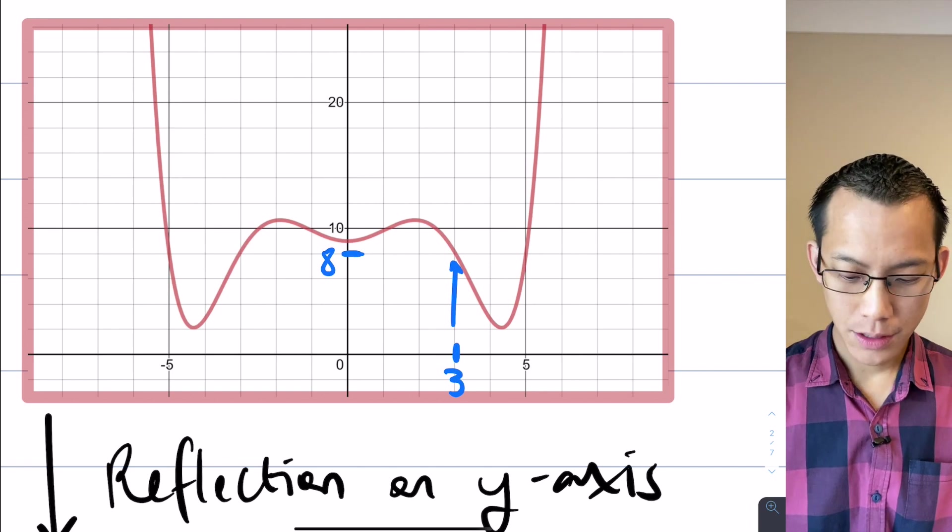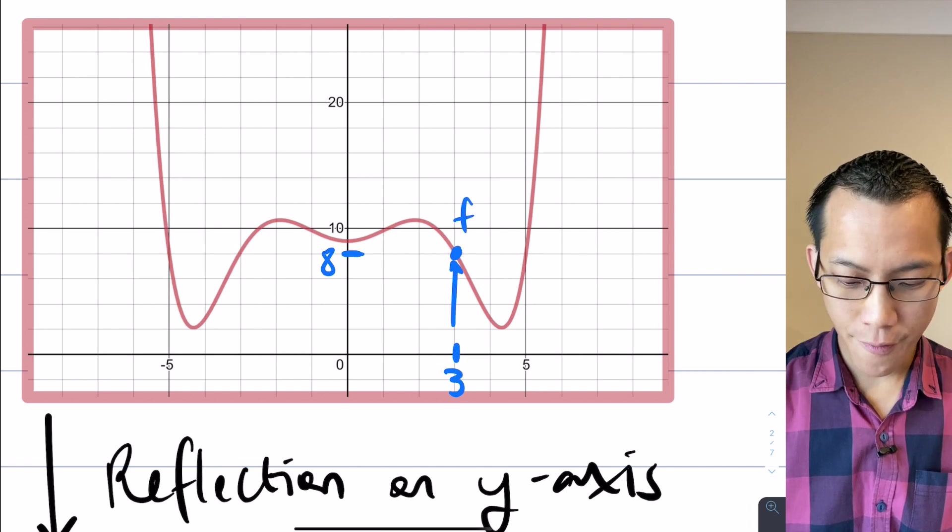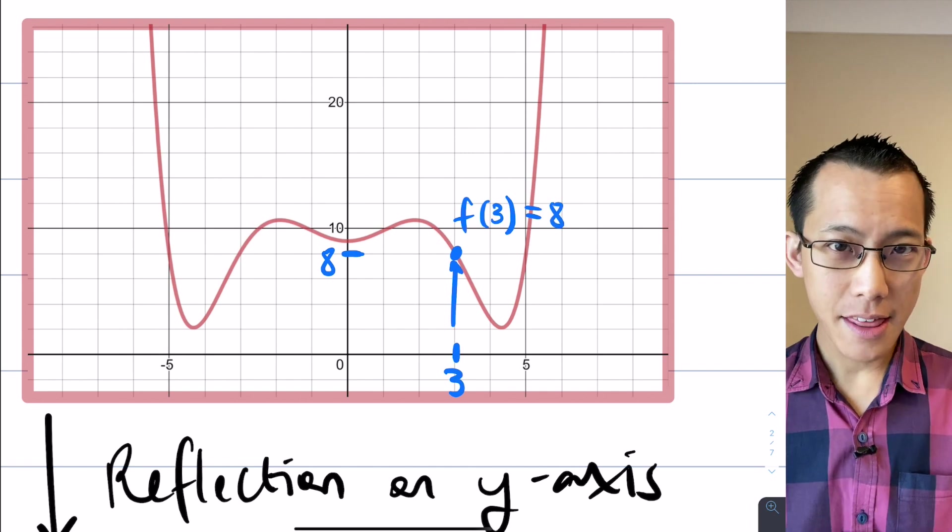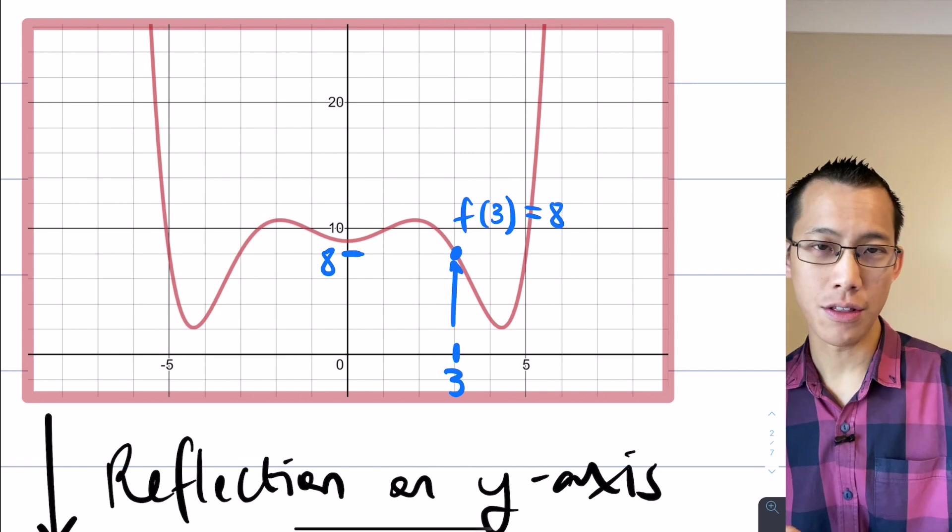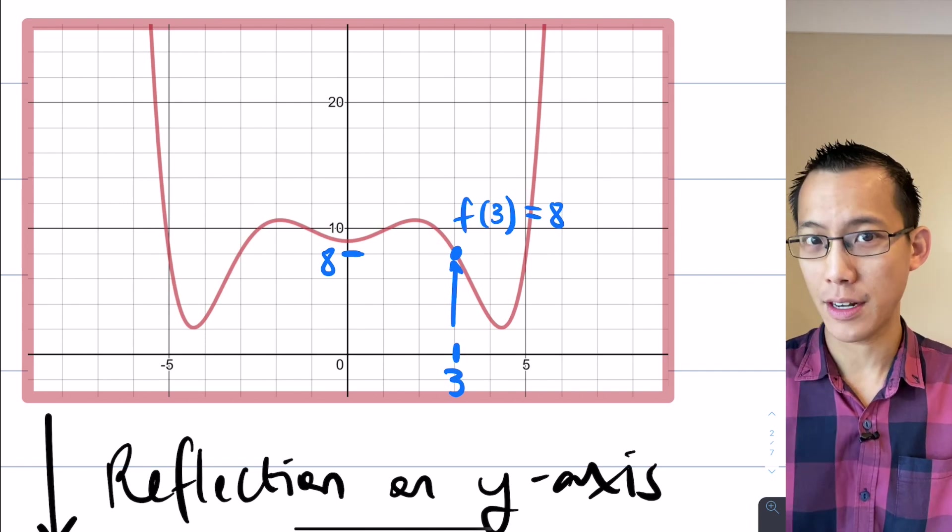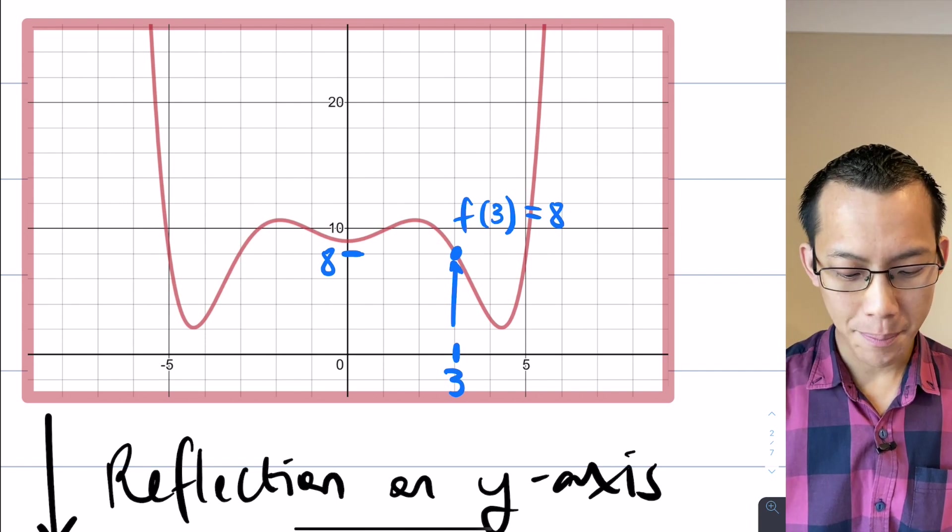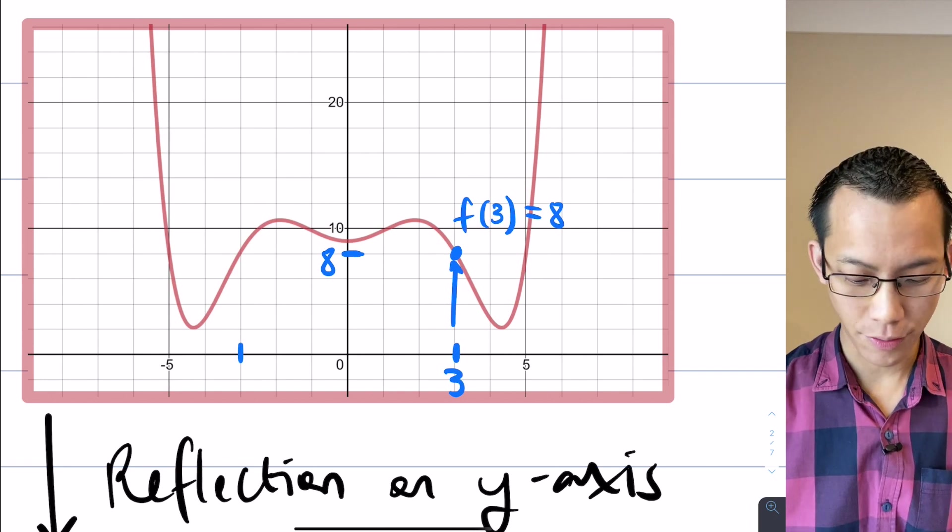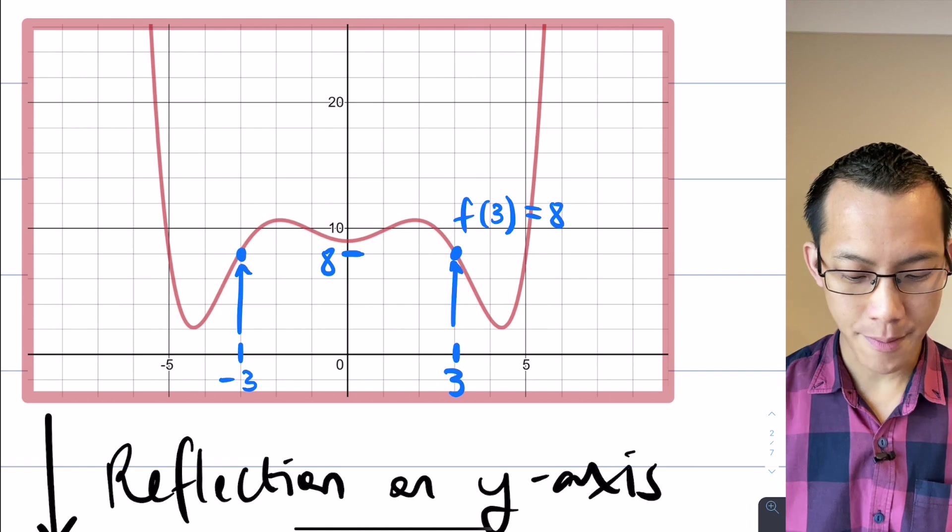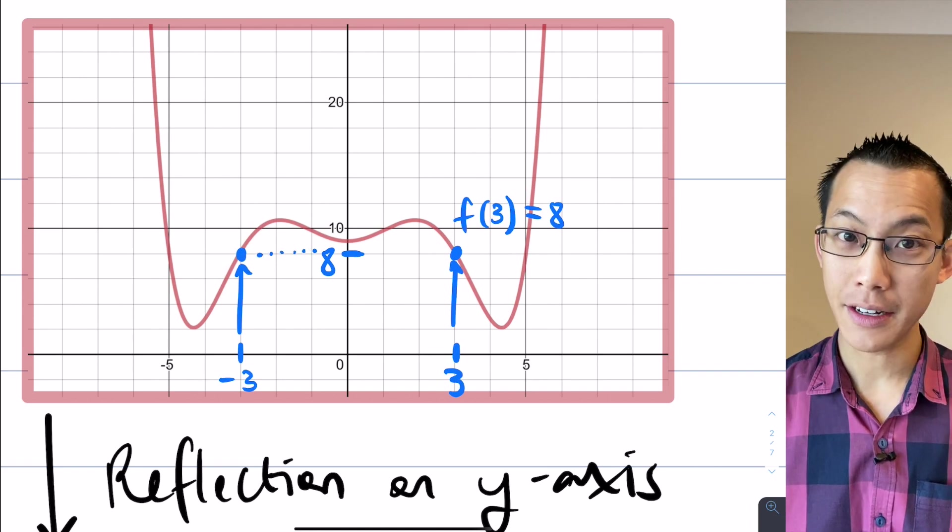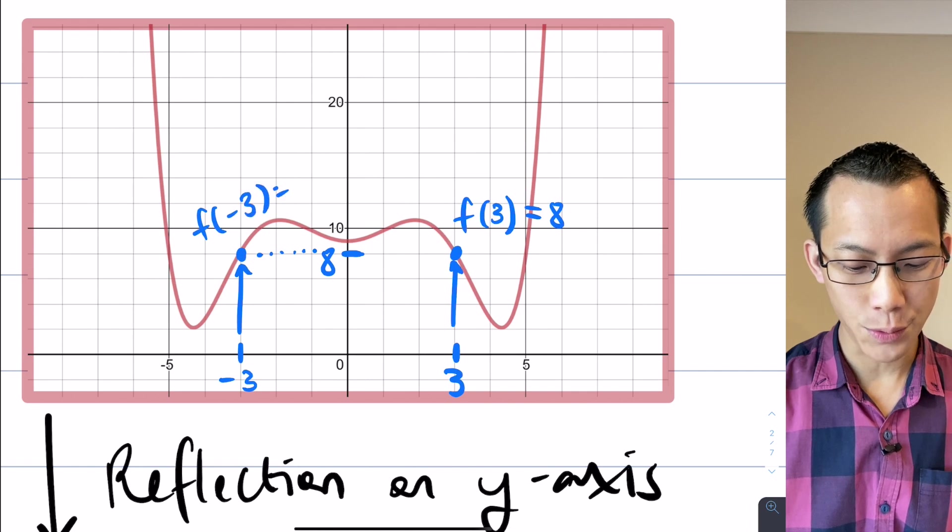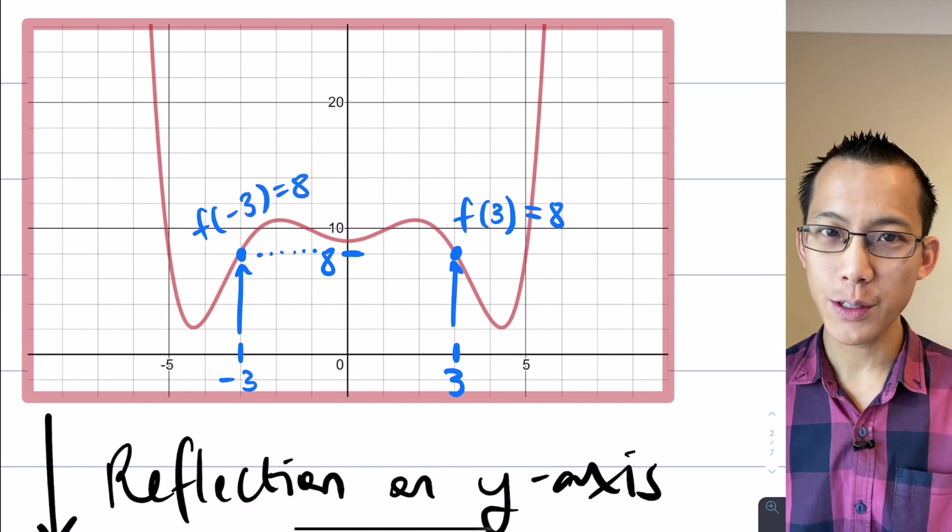When you go up to the function you get a y value. I'm looking at my scale there, that looks like it's about 8. So I would say f(3) is equal to 8. But to say that that's reflectional symmetry means that on the other side, on the opposite side, if I weren't putting in 3 positive 3, if I were putting in the opposite value which is negative 3,